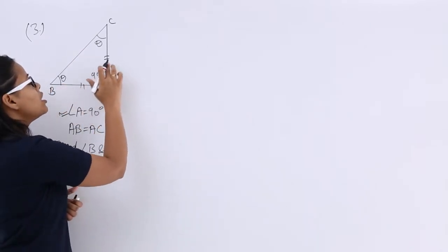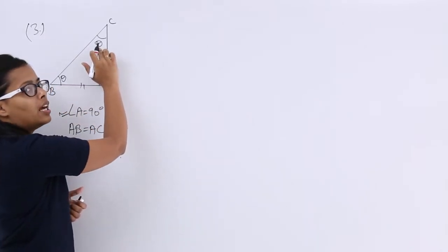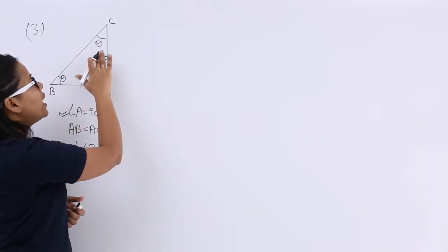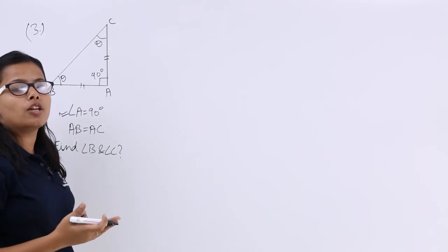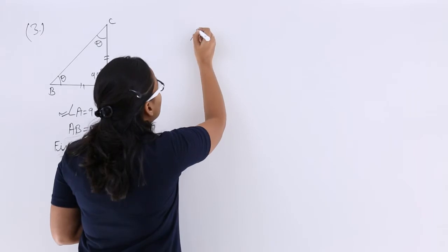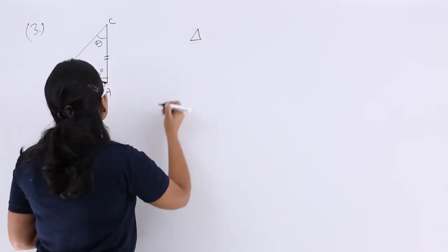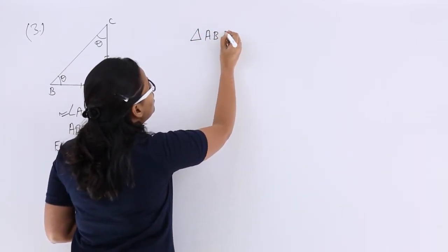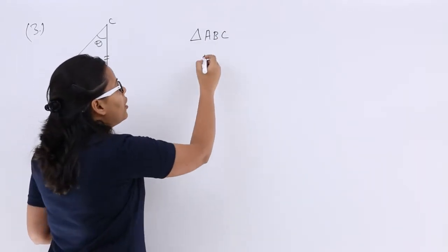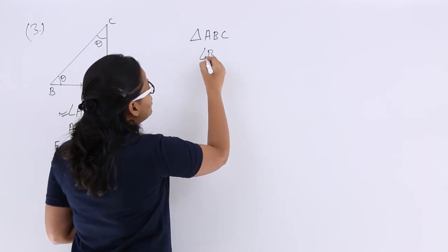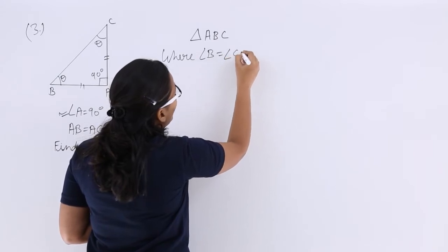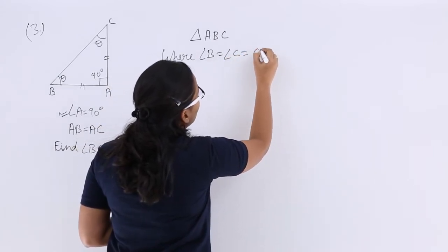If we call this angle theta, since these two sides are equal, the opposite angles are also equal. So let's consider triangle A, B, C, where angle B is equal to angle C, which is equal to theta.